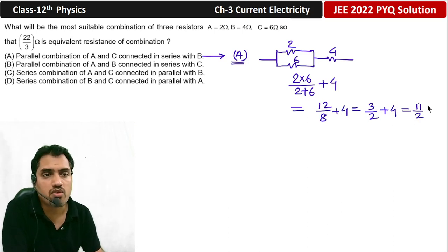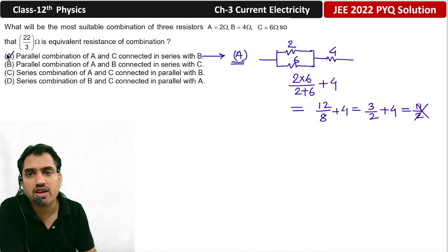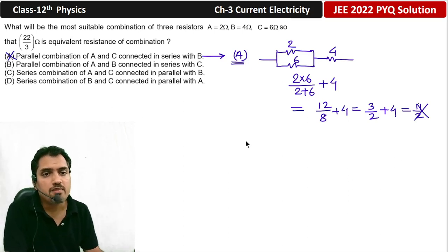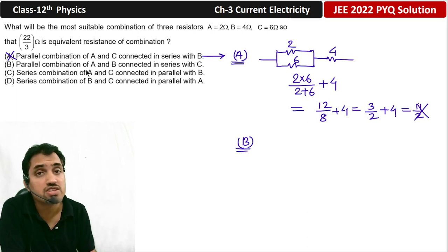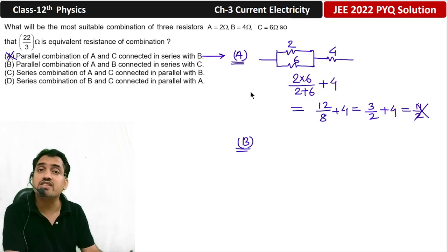Okay, so this is not the combination, so option A is wrong. So, let's check option B. B is the parallel combination of A and B connected in series with C.